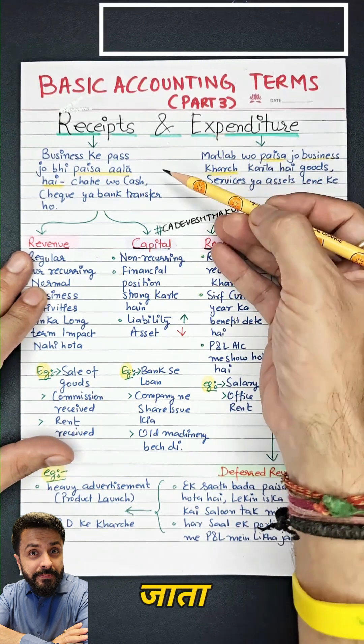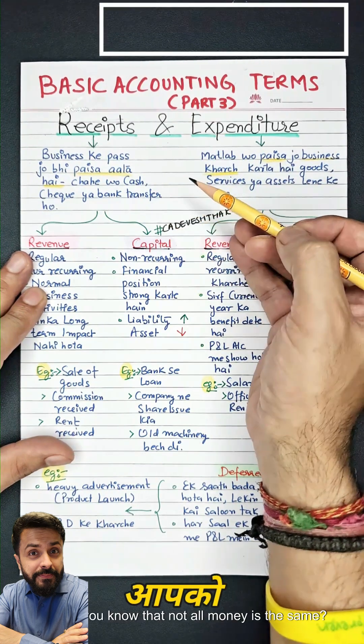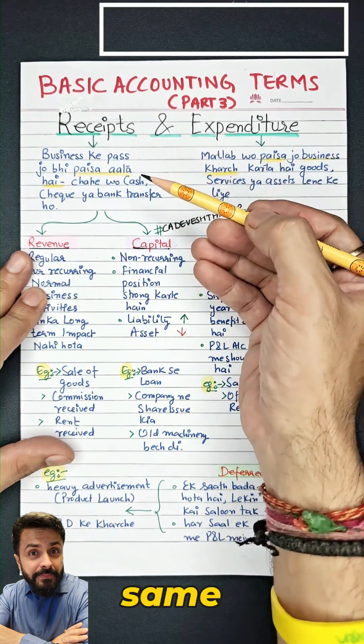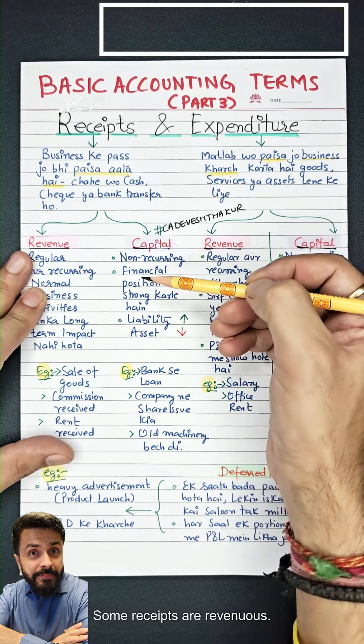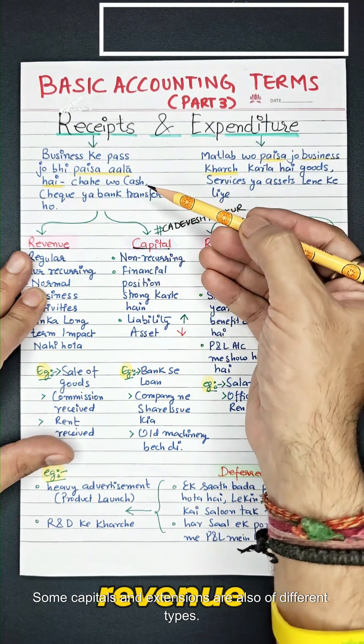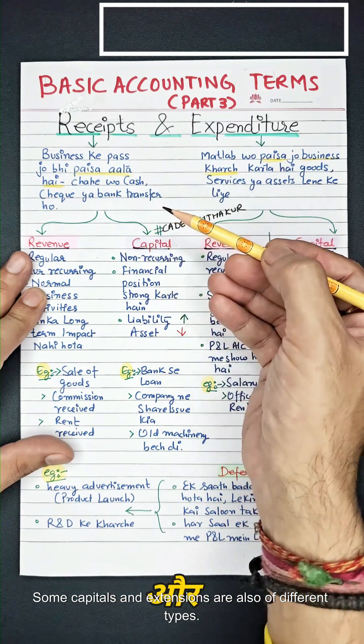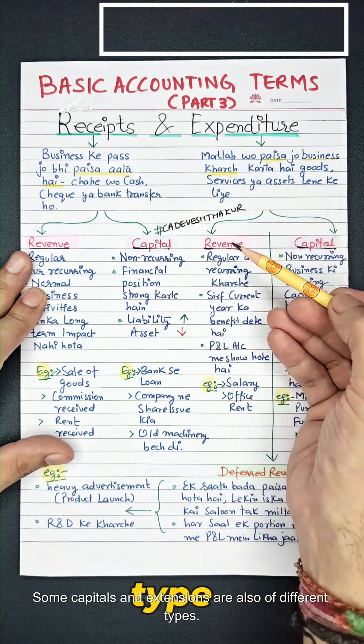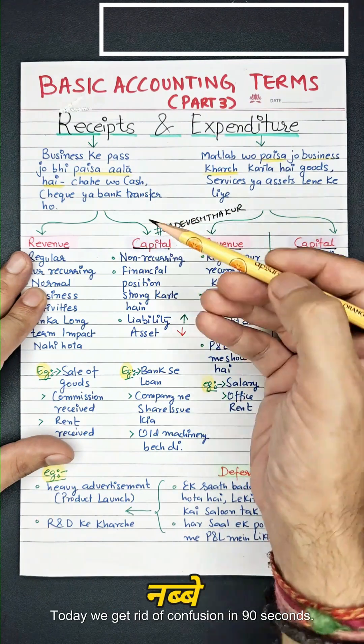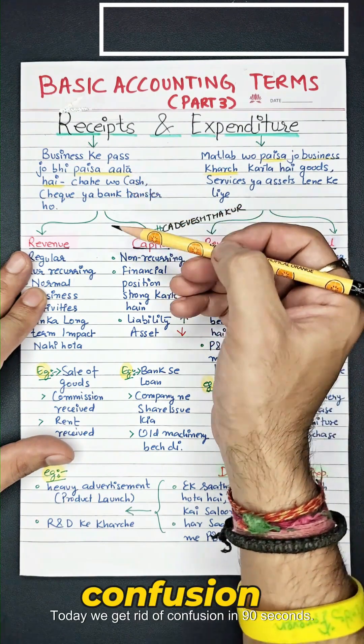Money comes and goes in business, but did you know that not all money is the same? Some receipts are revenues, and some are capital. Today we clear up all the confusion in 90 seconds.